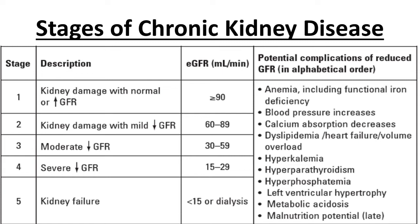There will be findings pointing towards renal compromise even with a normal GFR. In stage 2, the GFR is between 60 to 89 ml per minute per 1.73 meter square. In stage 3 CKD, GFR is between 30 to 59. In stage 4, GFR is between 15 to 29.